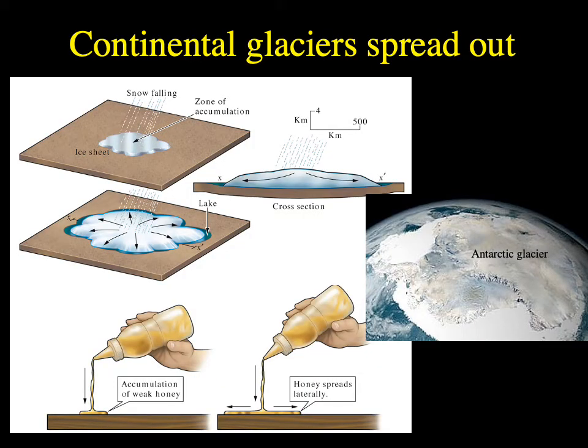Continental glaciers move differently from mountain glaciers — they aren't confined to a valley but sit on top of continental crust. They accumulate snow and build outward in all directions, like squeezing honey onto a desk: as you keep adding more to the middle, the pile grows outward in all directions. The Antarctic glacier and the Greenland ice sheet behave similarly — keep adding snow and ice to the center and it gradually expands outward.